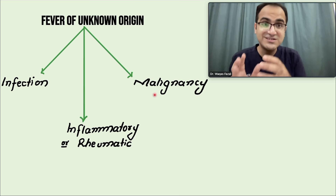When you have a patient of fever of unknown origin, the first and foremost thing is history and examination. Nothing is more important — 50 to 60% of the information and causes you can find come from history and examination. Perform detailed head-to-toe examination including neurological, abdominal examination looking for hepatomegaly and splenomegaly, lymph nodes, chest examination, and lower limb examination. Never miss fundoscopy — Roth spots in the eyes can indicate infective endocarditis.